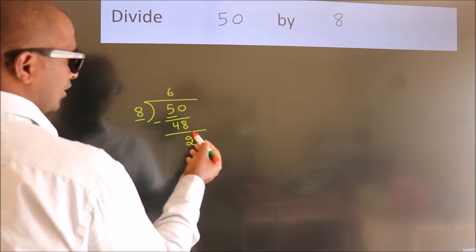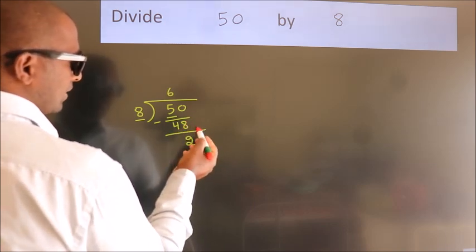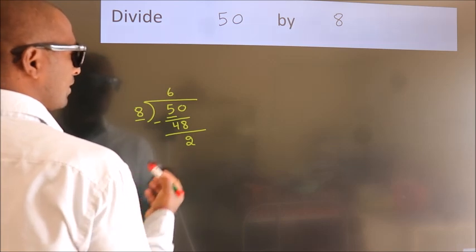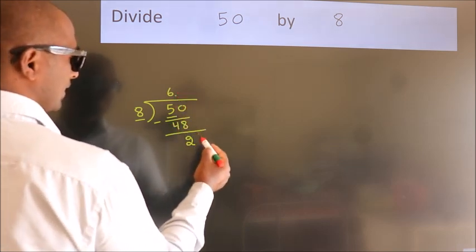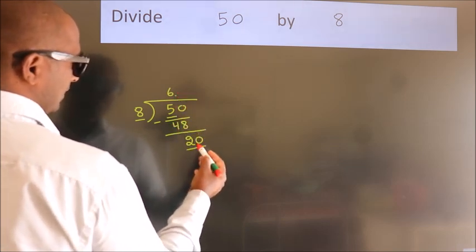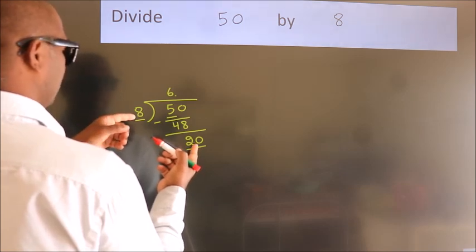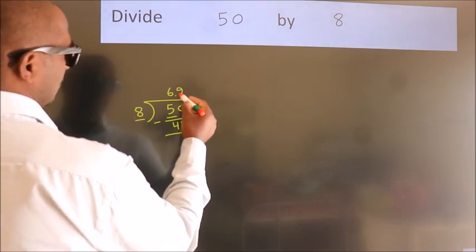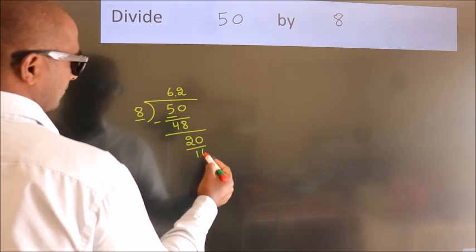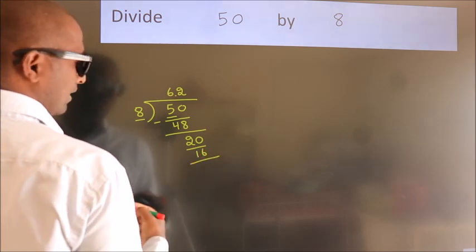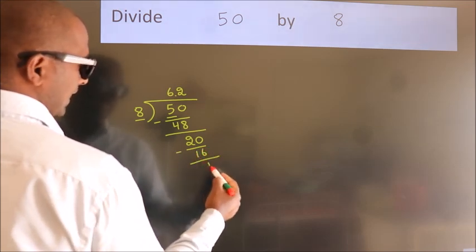After this, no more numbers to bring down. So what we do is put a dot and take 0. So 20. A number close to 20 in the 8 table is 8 times 2, which is 16. Now we subtract. We get 4.